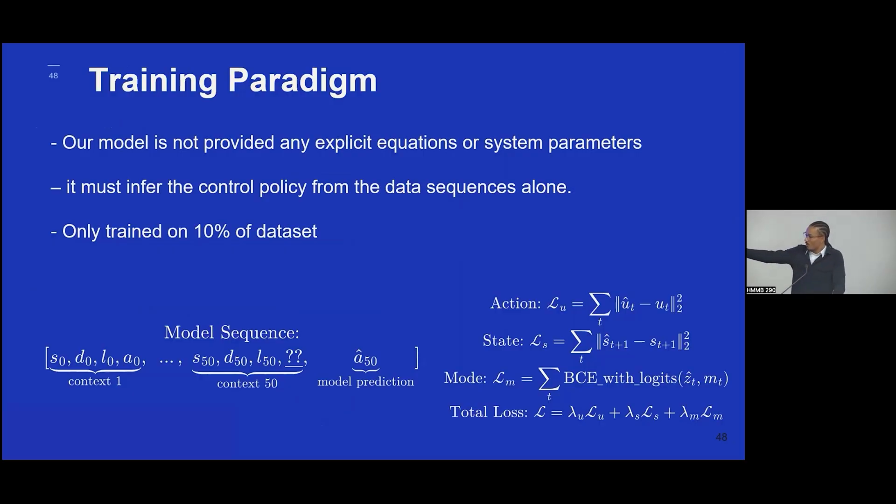And our data is here. So a model sequence, like context 1, you'll see, and then all the way up to context 50, then the action will be missing, and the model has to predict what that action will be, and that will be applied to the system.